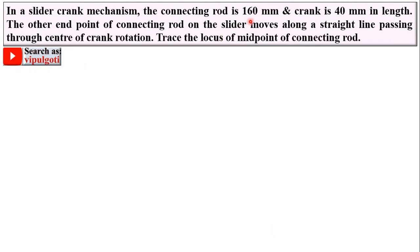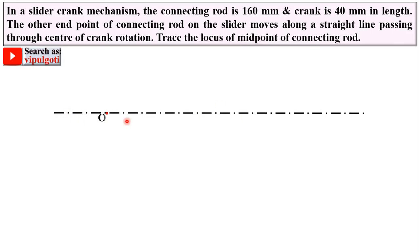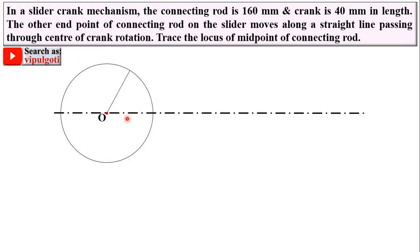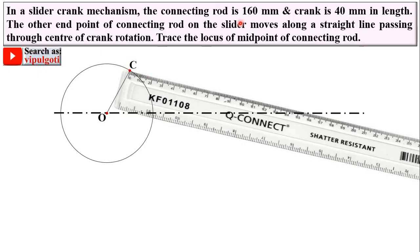Now let's see how we can draw it. First, draw the reference axis line, mark any one point on it and name it O. Then draw a circle with radius equal to the crank length, which is 40 mm. Then draw one line at 60 degrees with the reference axis — 30 degrees can also be taken, but normally 60 degrees is preferable. Mark the point and name it C, so OC is the crank. The connecting rod length is 160 mm, so mark it and give the name P, which is the piston or slider.